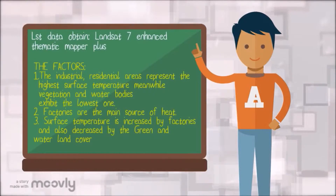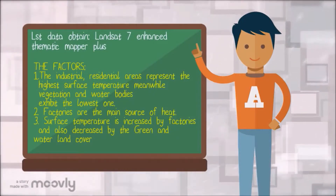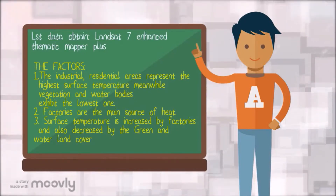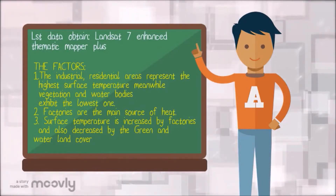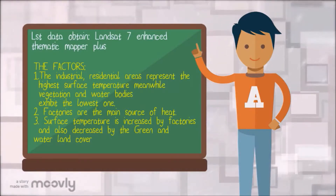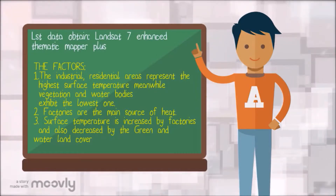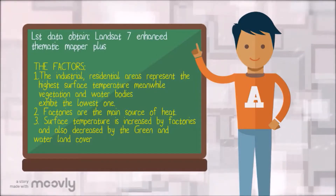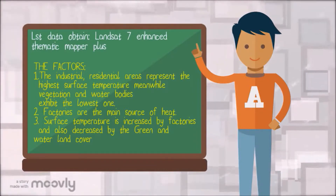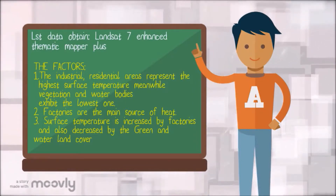For the third journal, data of land surface temperature was obtained from Landsat 7 Enhanced Thematic Mapper Plus. In this journal, land surface temperature at industrial, residential, vegetation, and water body areas was obtained. From the results, industrial and residential areas represent the highest surface temperature, while vegetation and water bodies show the lowest.